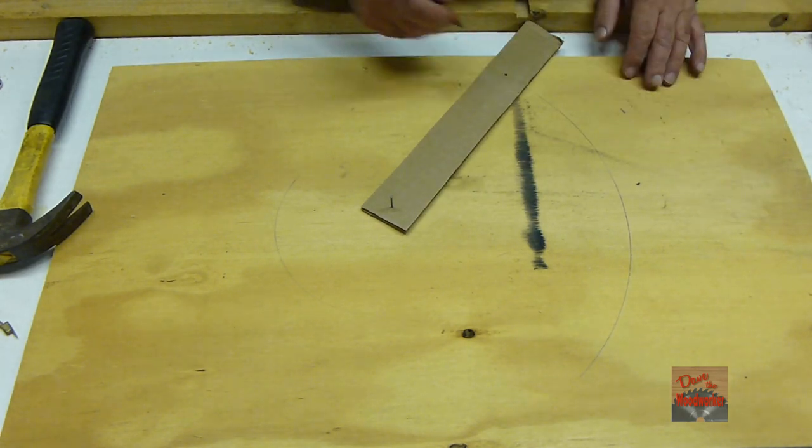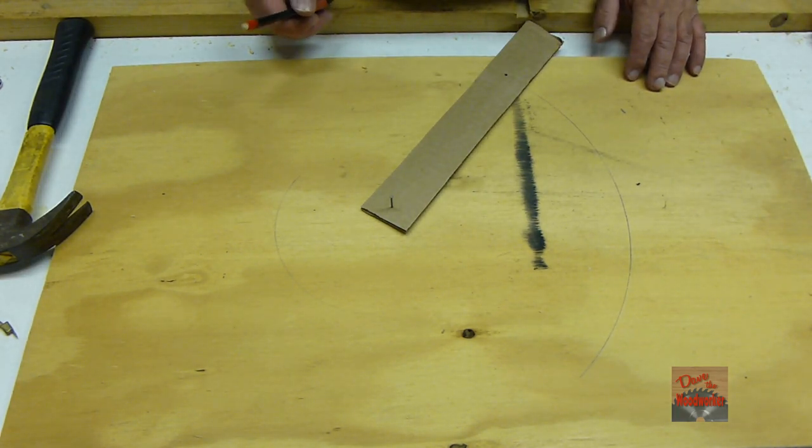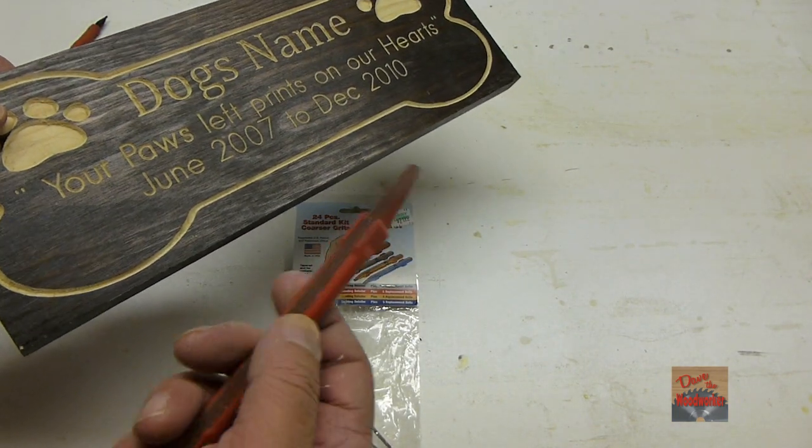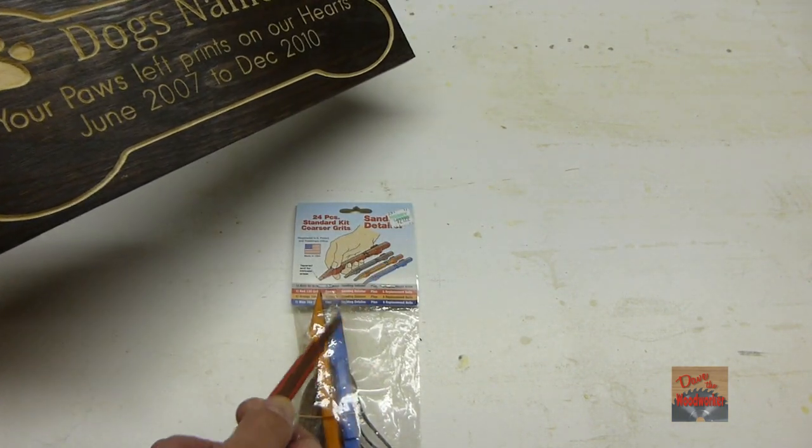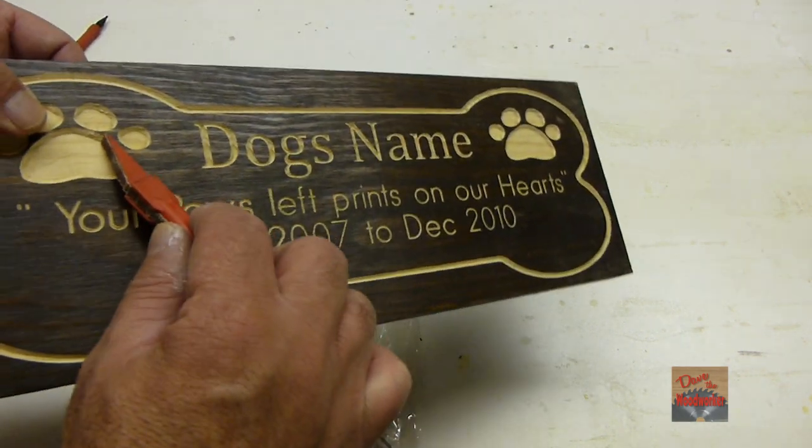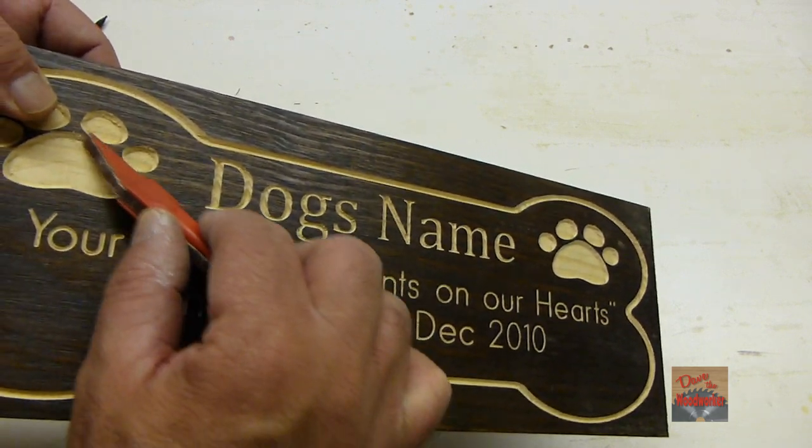For sanding details and carvings, you can buy these little sander detail kits from Hobby Lobby. They're good at sanding spots where you get fuzzies or something.